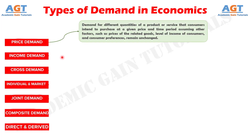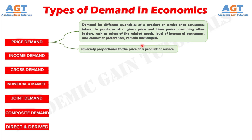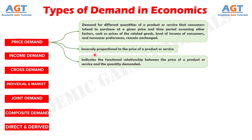Price demand is the demand for different quantities of a product or service that consumers intend to purchase at a given price and time period, assuming other factors such as prices of related goods, level of income of consumers, and consumer preferences remain unchanged. Price demand is inversely proportional to the price of a product or service — as the price rises, its demand falls and vice versa. Therefore, price demand indicates the functional relationship between the price of a product or service and the quantity demanded.